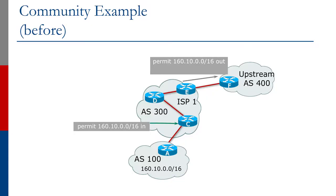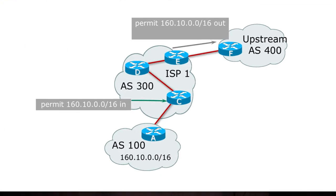These are really useful for applying policies within and between autonomous systems. In the days before BGP communities, a network operator connecting BGP customers would have to set up a BGP filter every time they connected a customer to allow that BGP announcement into the network. For example, with AS 300 and customer AS 100 announcing a prefix, we set up an incoming filter to allow 16.10.0.0/16 inbound, and we also want to give AS 100 transit to our upstream provider in AS 400.